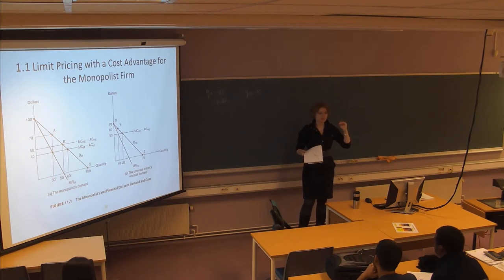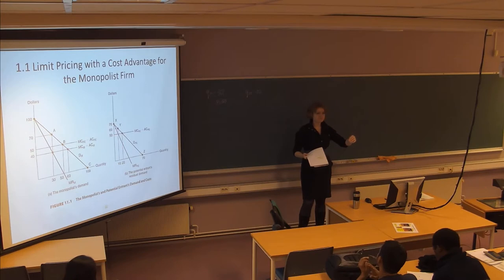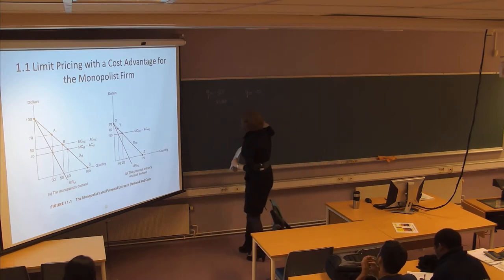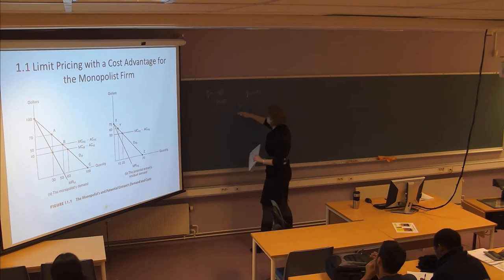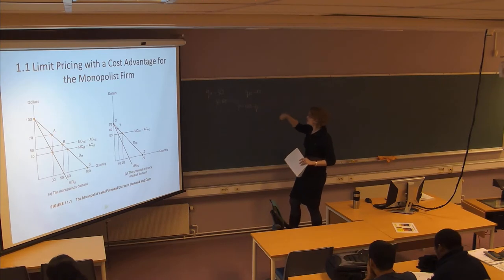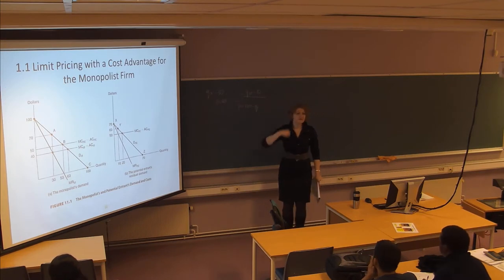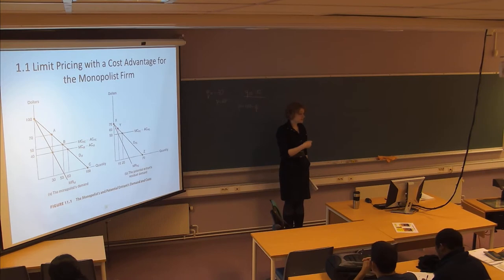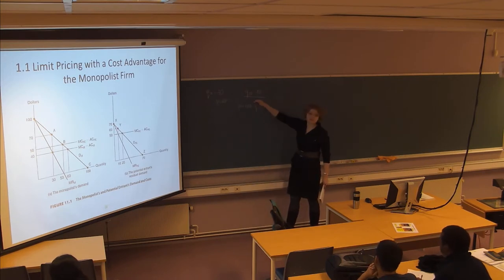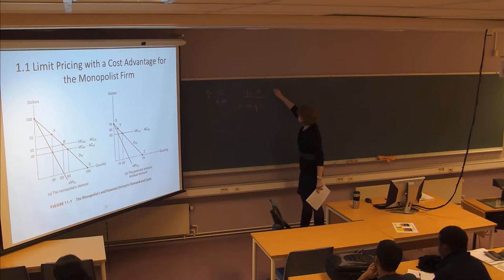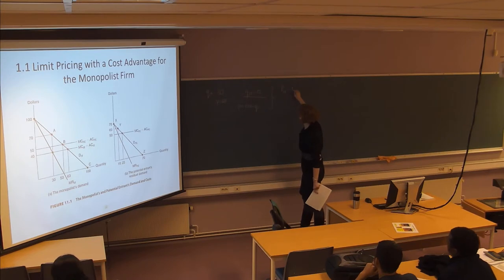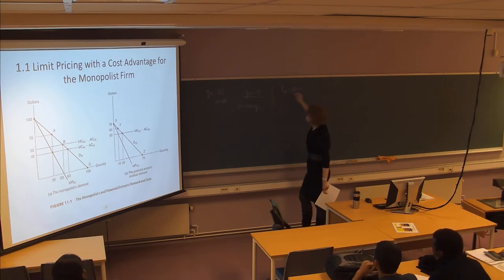What if we think that the monopolist can respond to entry? Here we understand that if the demand function is 100 minus Q, the monopolist now understands that there are already 10 units on the market. We can think about the residual demand function for the monopolist, just in the same way as we did when deriving that 10. From here we get that a new demand function faced by the monopolist is 100 minus this 10 minus Q of the monopolist.